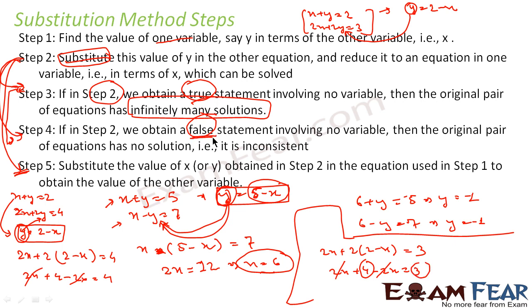Since 4 equals 3 is a false statement, these two equations have no solution — they are inconsistent. Just as in the graphical method, we have three outcomes: inconsistent (no solution), infinite solutions, or one unique solution. In all cases, the first step is to find the value of y in terms of x (or x in terms of y), then substitute that value into the second equation so it becomes entirely in one variable.